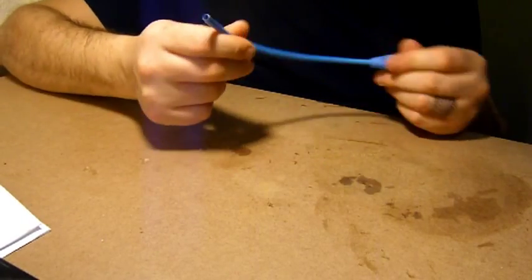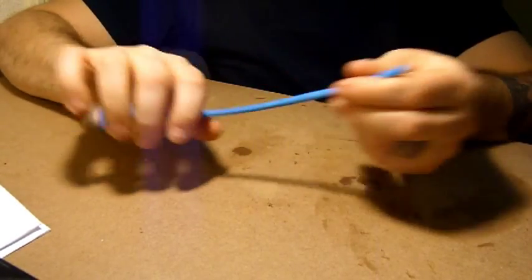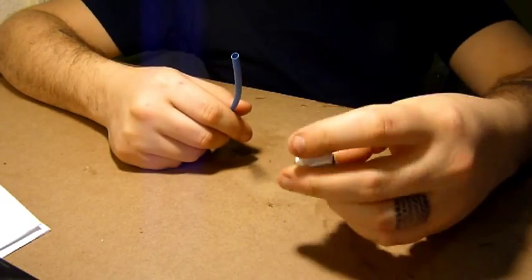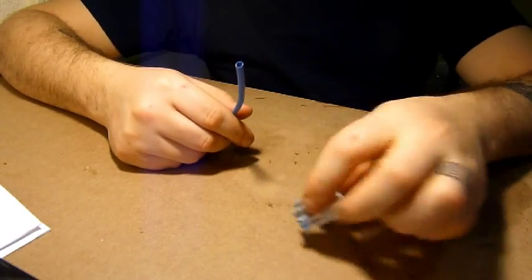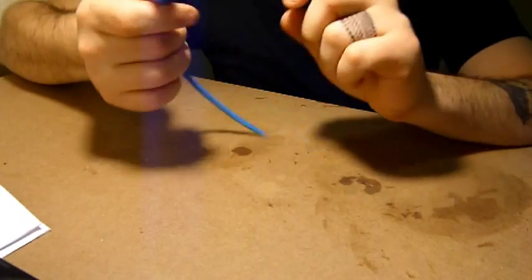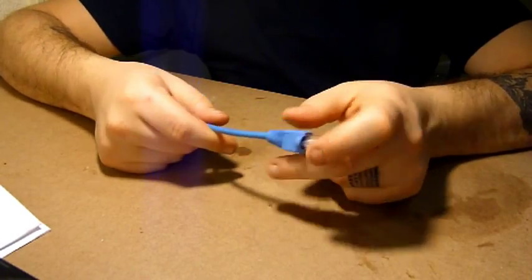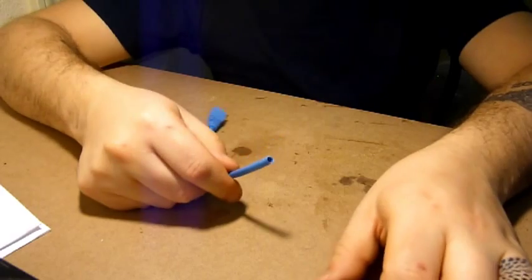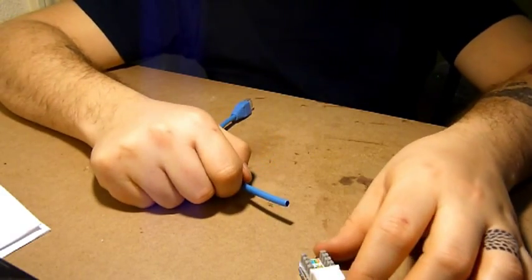Alright, for this video I'm going to show you how to crimp a female side connector on a Cat5e cable. The last video I did showed you how to do a male end. The female end isn't particularly hard.